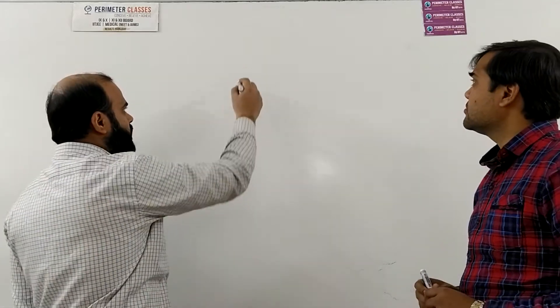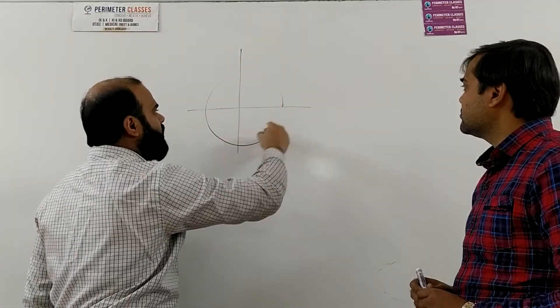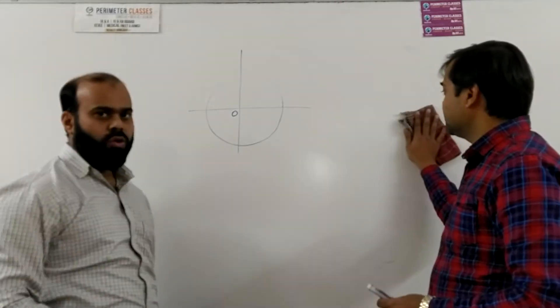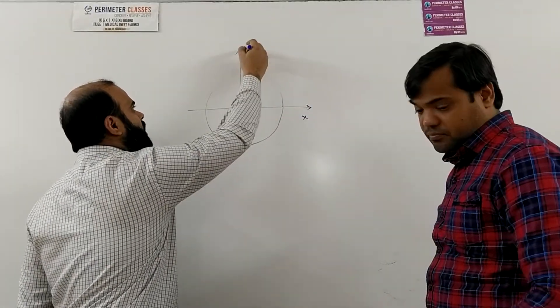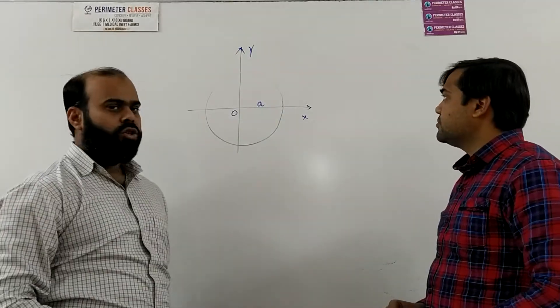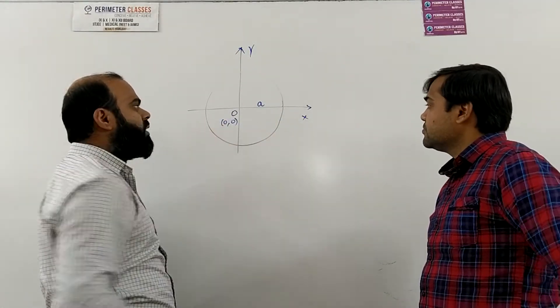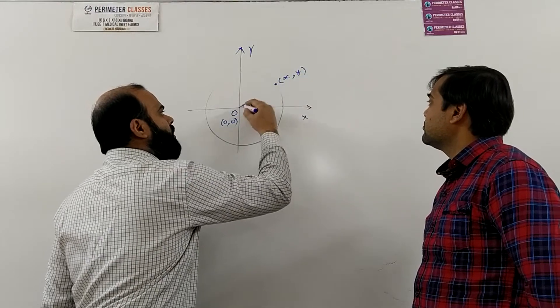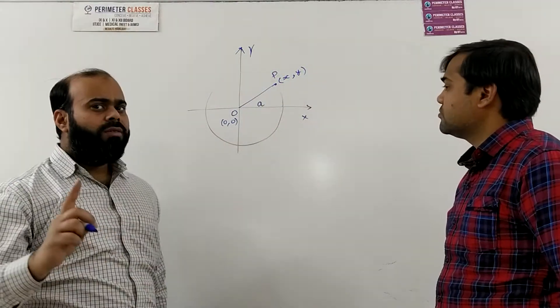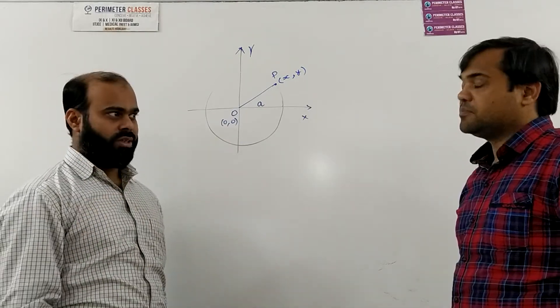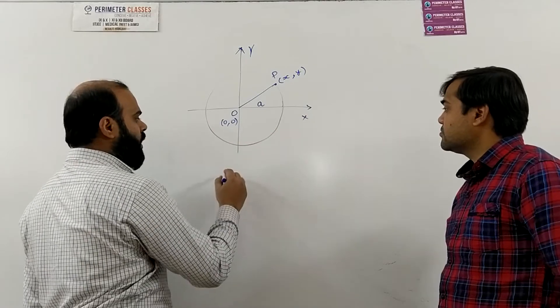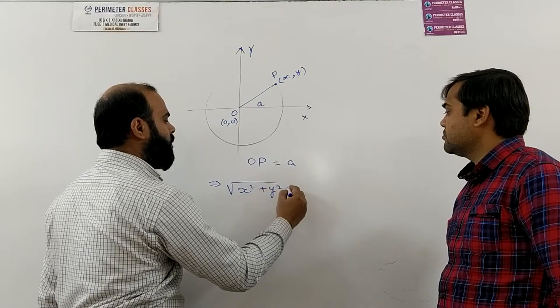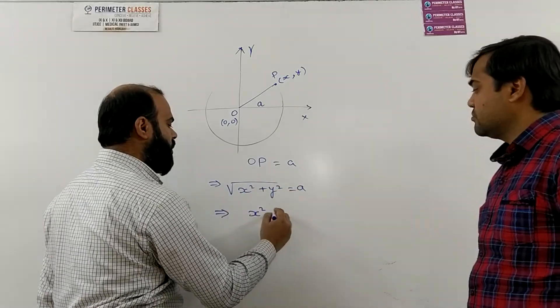So in this picture first we will try to find out equation of a circle and this circle has a center which is origin and it is having a radius suppose a. So in such case if we take a point x comma y on the circle then the distance of this point from this origin will always be constant and that is equal to the radius of the circle. So we can say by distance formula that OP is equal to a which implies root over x square plus y square is equal to a which means x square plus y square is equal to a square.